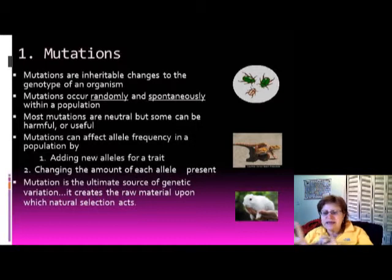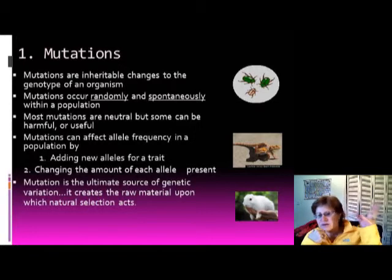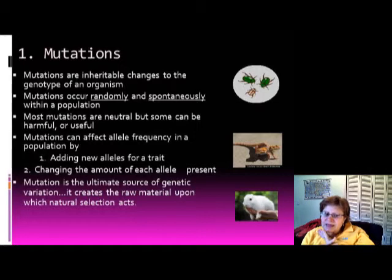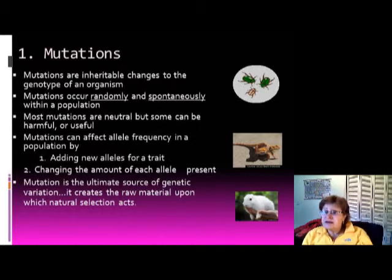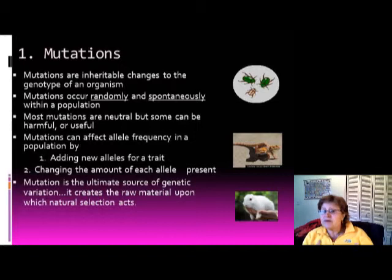Mutations always occur randomly and spontaneously within a population. Most are neutral — such as having six fingers, being born with a tail, or an extra ear. Some mutations are very harmful, like being born with an open heart, while some are very beneficial. If a mutation is good for the environment, that individual is more likely to survive long enough to reproduce.